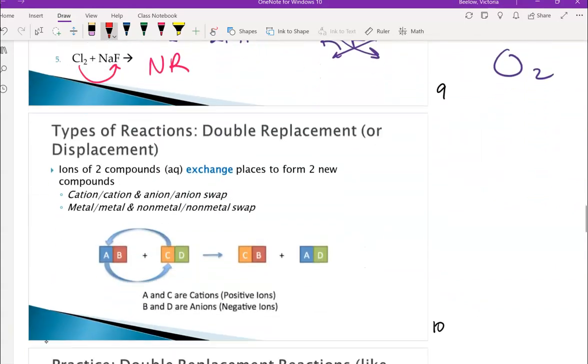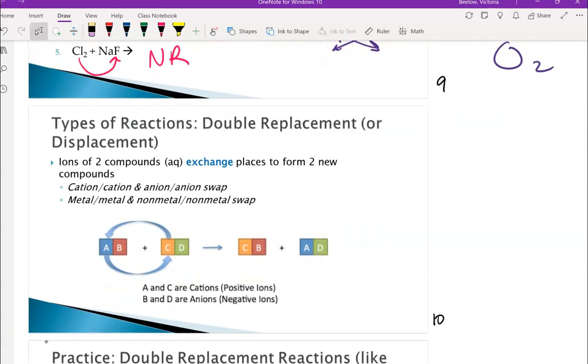So with double replacement, we're going to be switching the first two elements with each other, because in all of these scenarios, you're going to have an ionic compound, which is a metal and a non-metal bonded together, and only likes can switch with likes, so the metals will switch with each other, which is always the element written first.